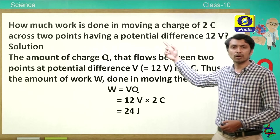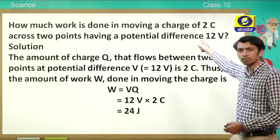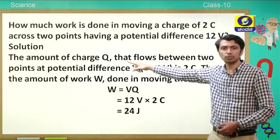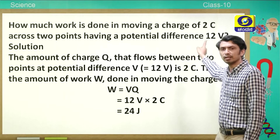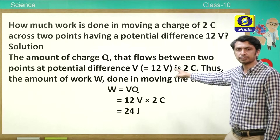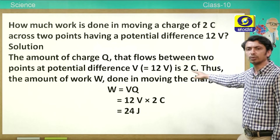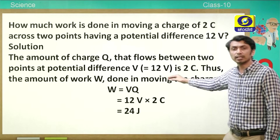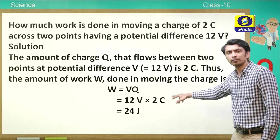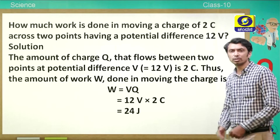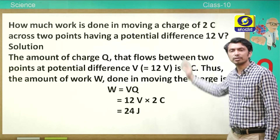Let us solve a problem on potential difference. How much work is done in moving a charge of 2 coulomb across two points having a potential difference of 12 volt? Using W = V × Q, we get W = 12 × 2 = 24 joule. That is the amount of work done to move 2 coulomb of charge across a potential difference of 12 volt.